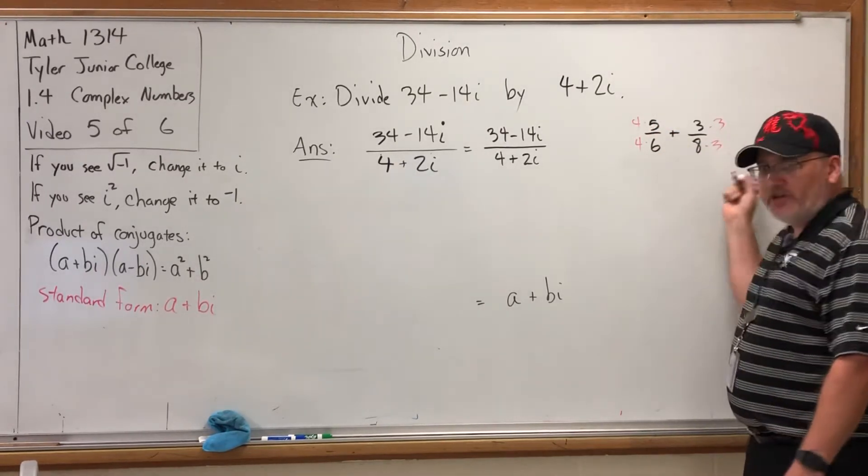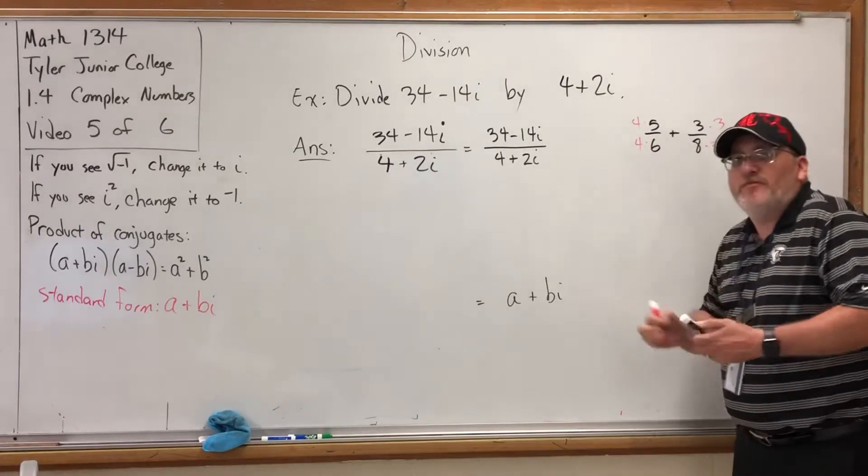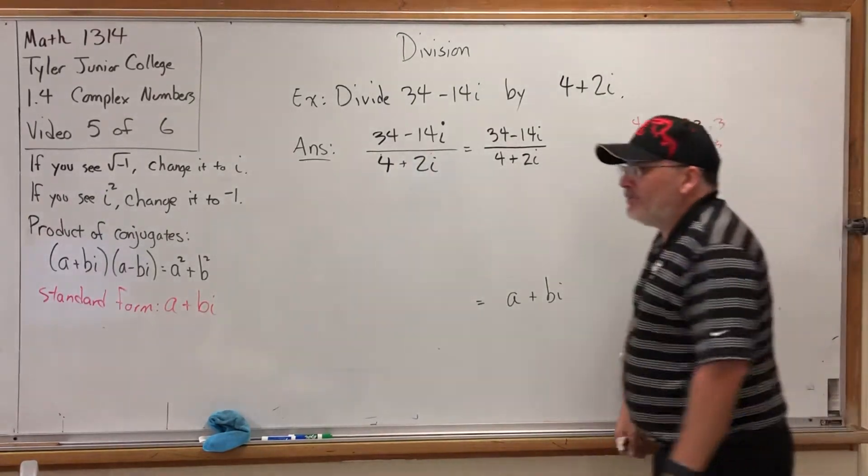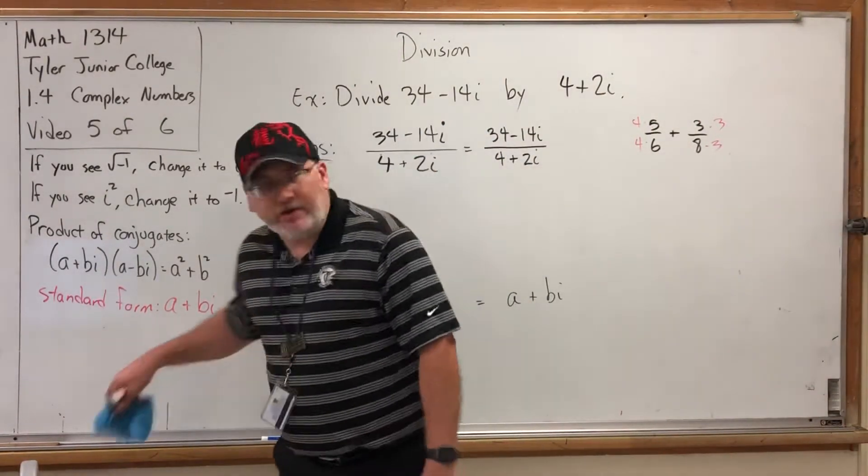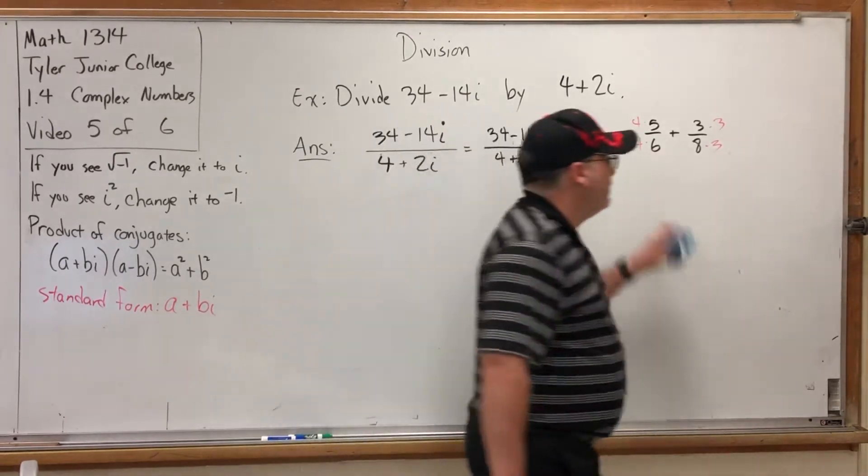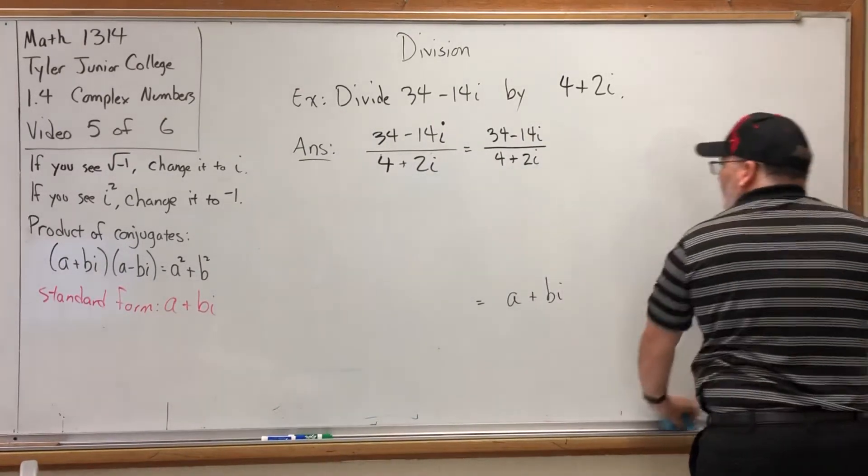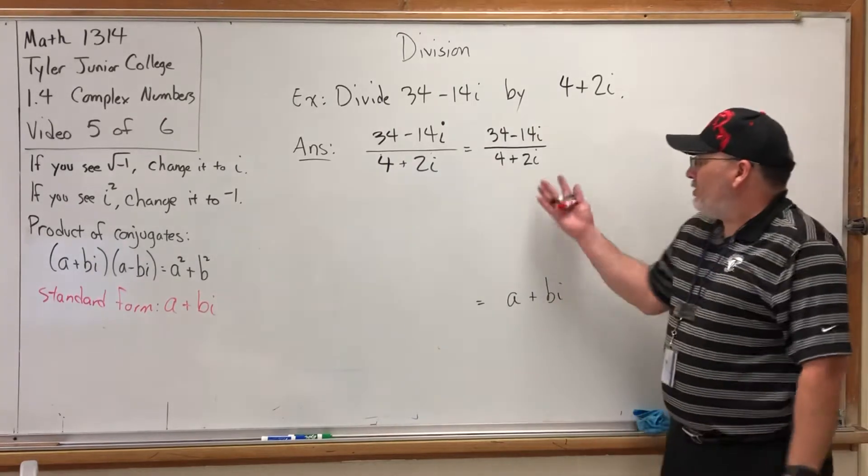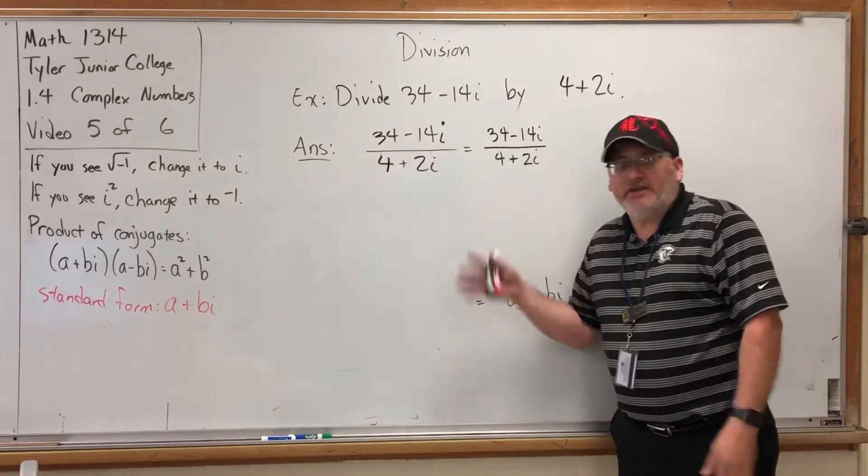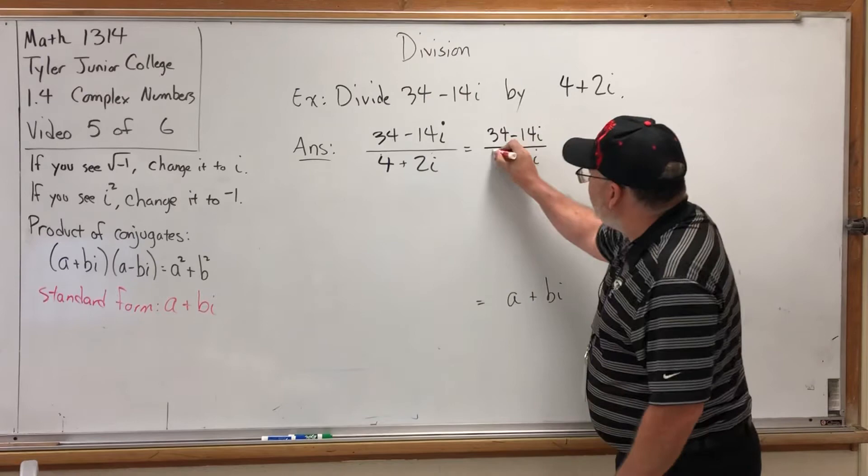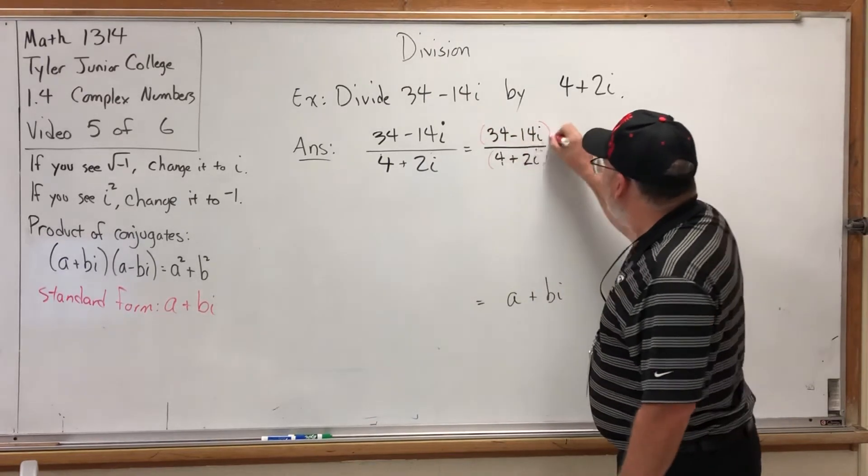Let's multiply by something convenient that accomplishes something. In this case it accomplishes getting the common denominator, but what are we trying to accomplish here? We're trying to accomplish a denominator without an i in it. So let's put those two things together.